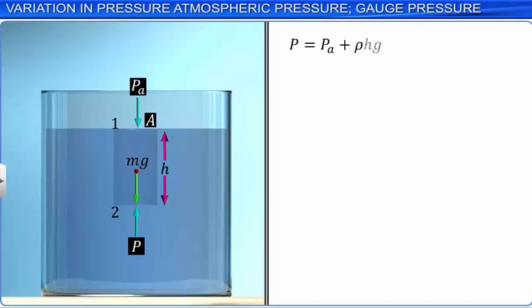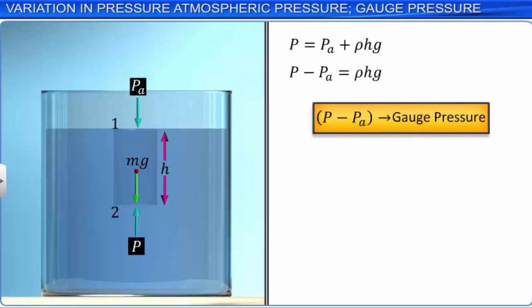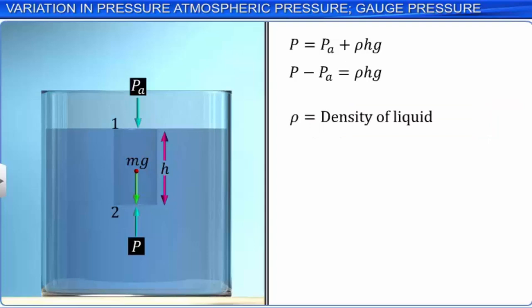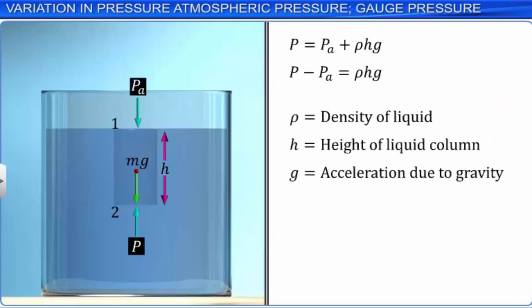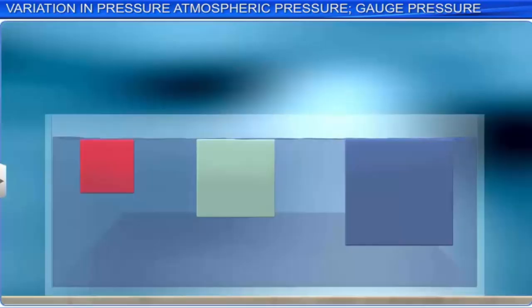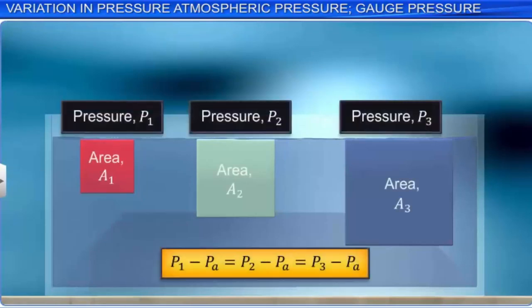At a given height, the gauge pressure is the same at all points at the same horizontal level. Consider various vessels of different cross-sections connected at the bottom by a horizontal pipe. When liquid is poured through the opening of a vessel, the liquid occupies the same level in all attached containers. The level H is the same in all containers though they contain different volumes of liquid, proving that liquid pressure is the same at all points at the same horizontal level.